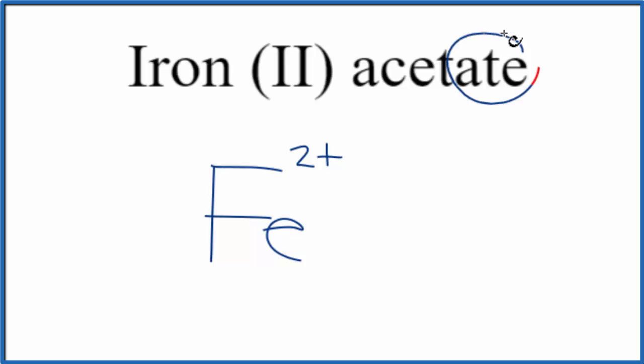Acetate, when you see A-T-E, you're not going to find that on the periodic table. This is a polyatomic ion. You can either memorize the acetate ion, or if you're allowed, you can look it up. Let's look it up.